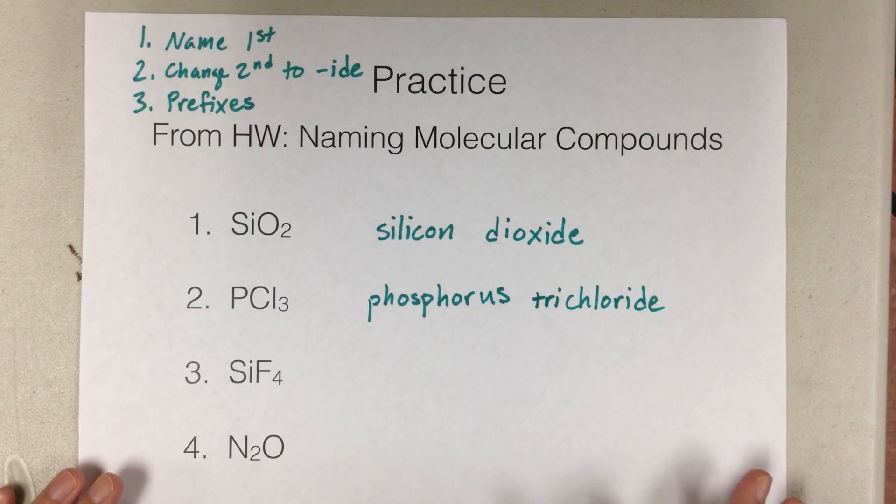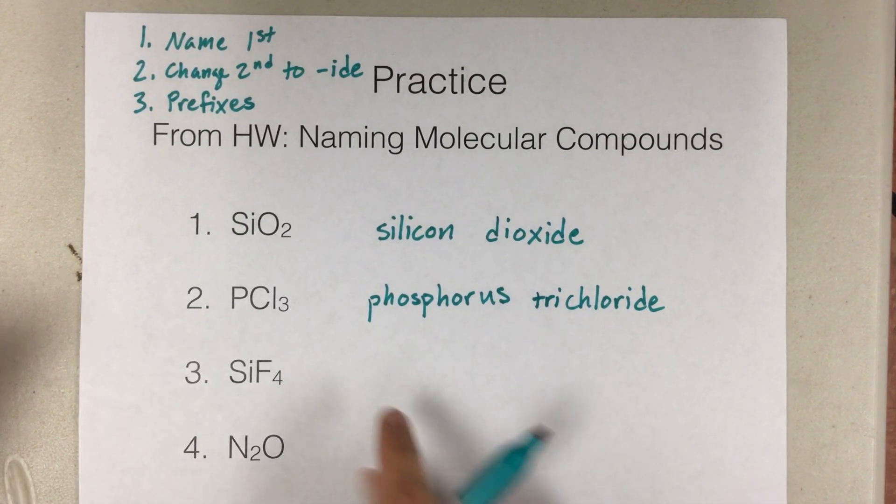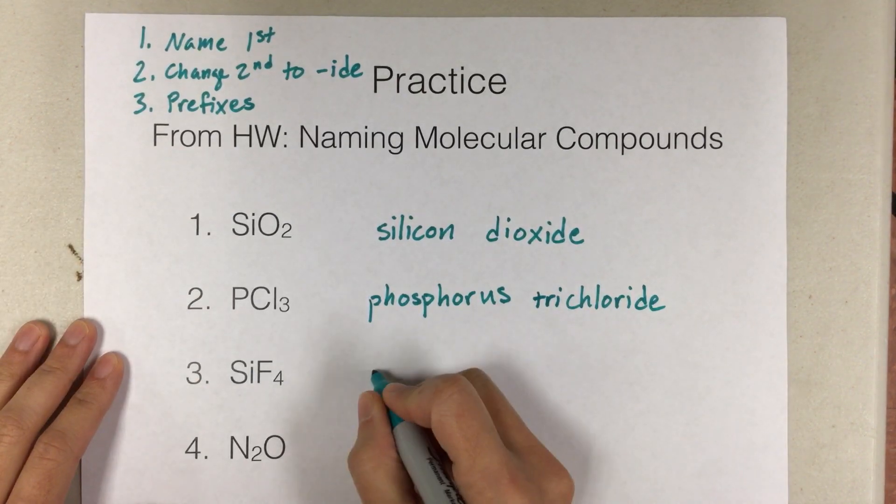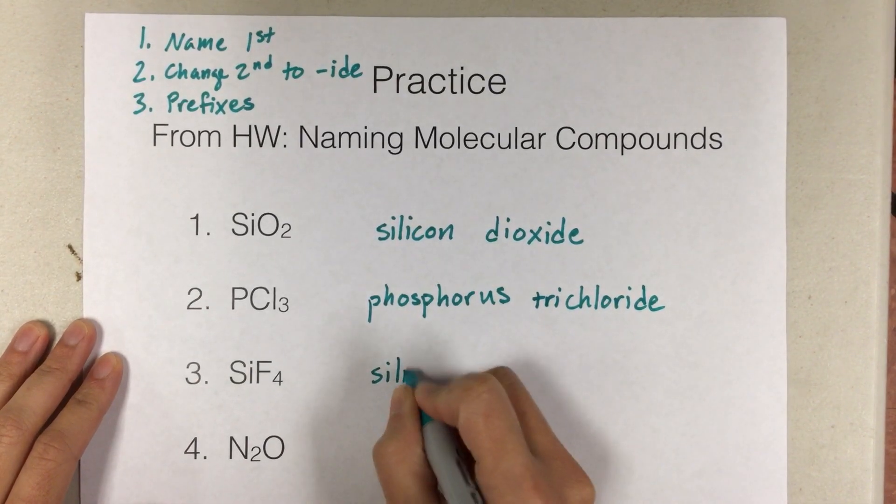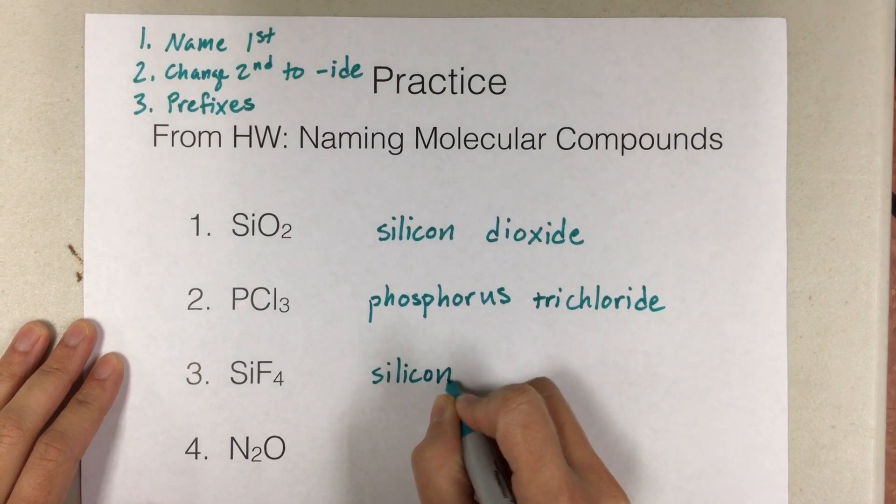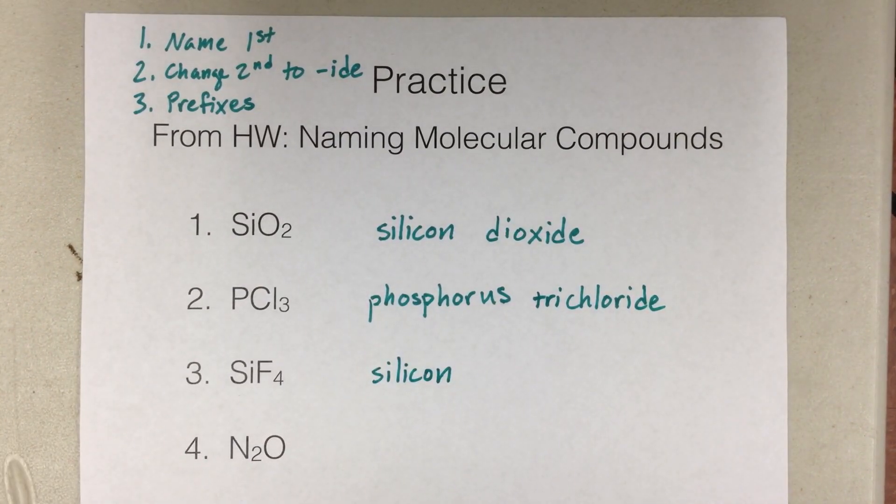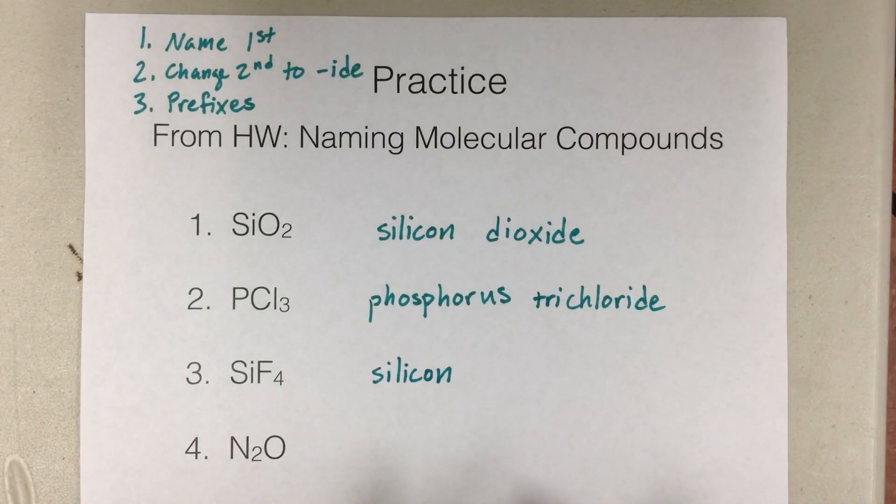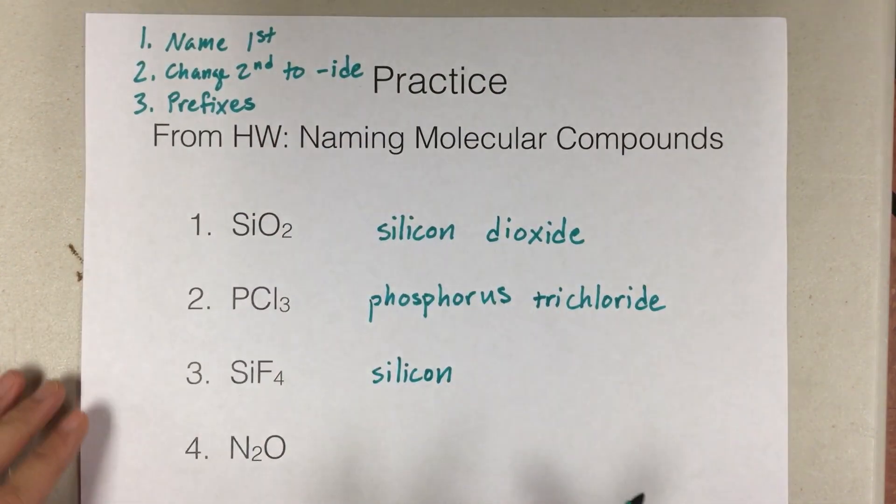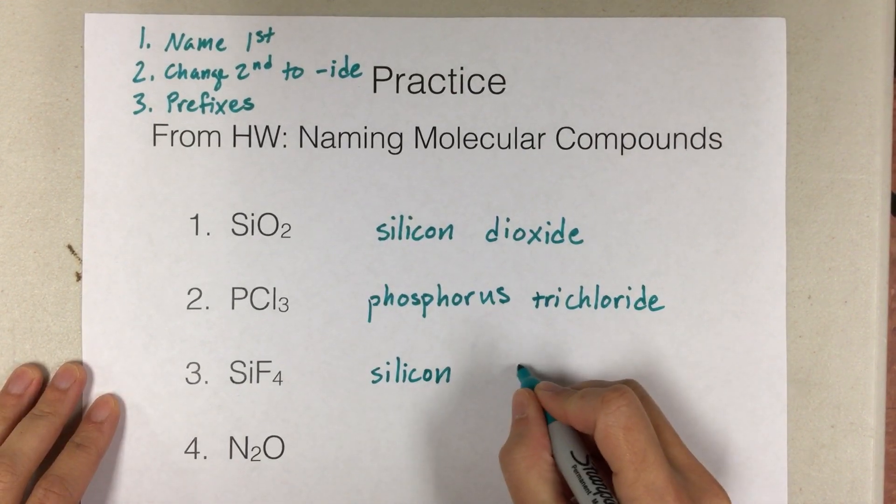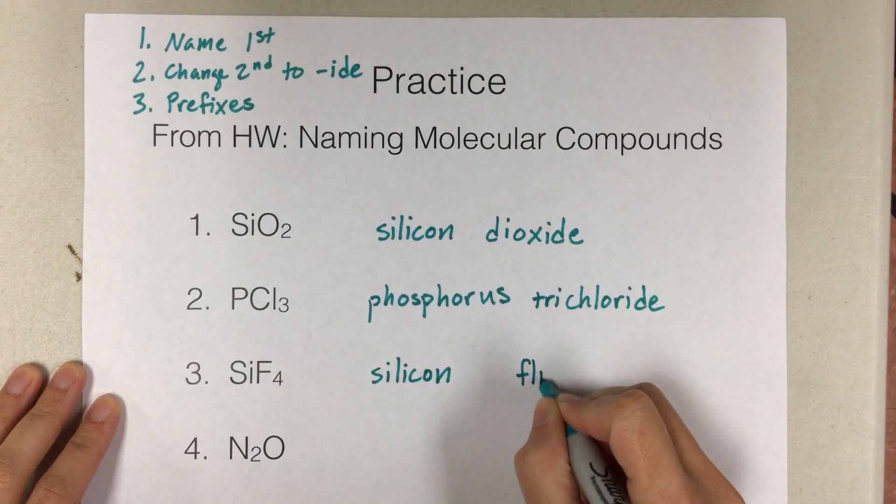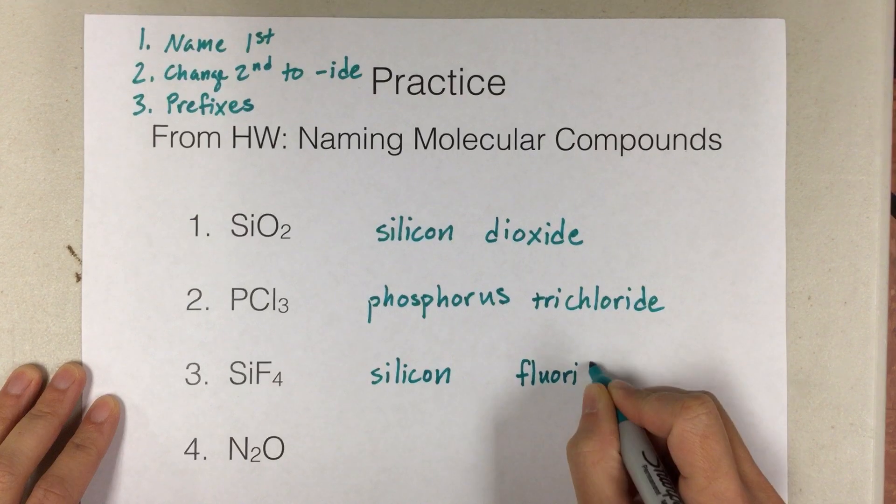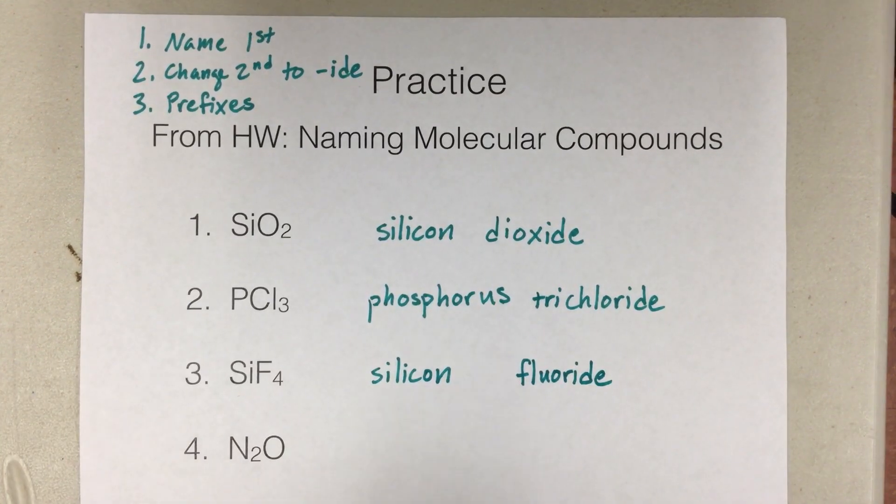Next, number three, SiF4. So Si, remember we had that one earlier. That's silicon. All right, and then the second element, F, is fluorine. Careful with the spelling. And we need to change the ending to -ide. So fluoride.